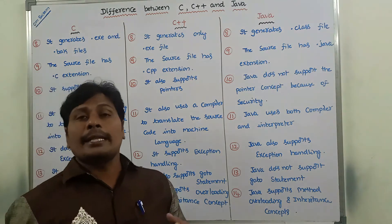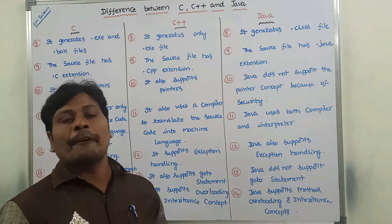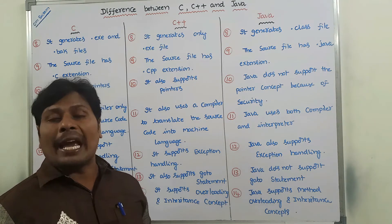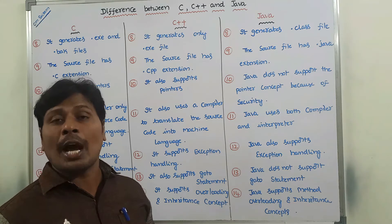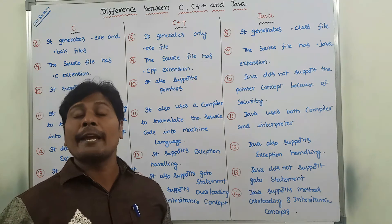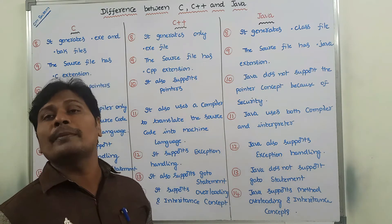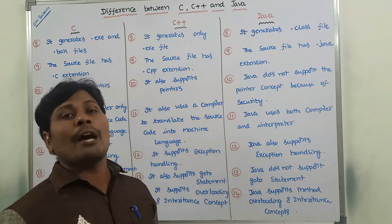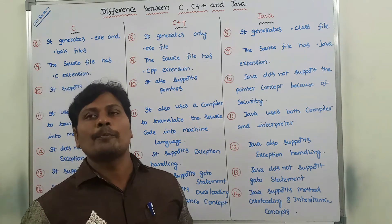In C language, the source file has a .c extension. Every C++ program can be saved with a .cpp extension. Every Java program can be saved with a .java extension.